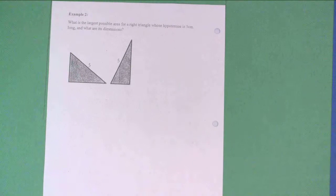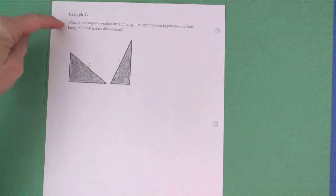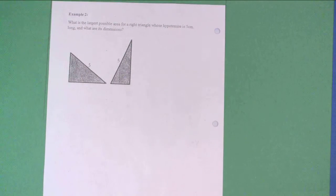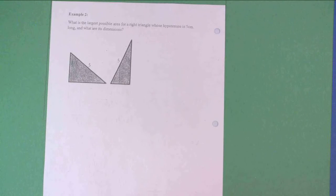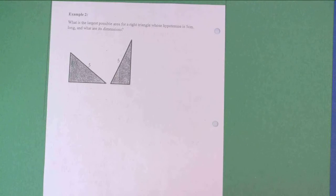Hey guys, we're here for the last video on optimization, which is going to cover example two on the back of your note sheet. This problem says: what is the largest possible area for a right triangle whose hypotenuse is five centimeters? And what are its dimensions?